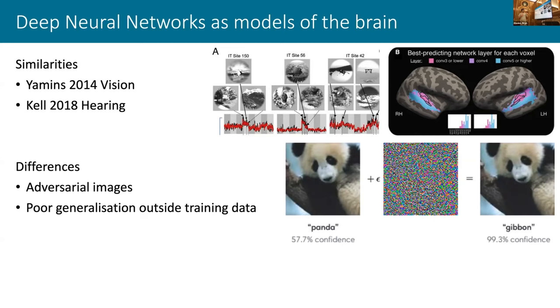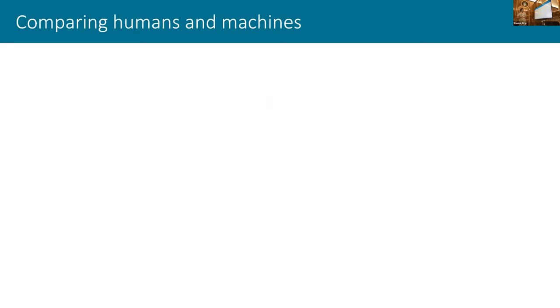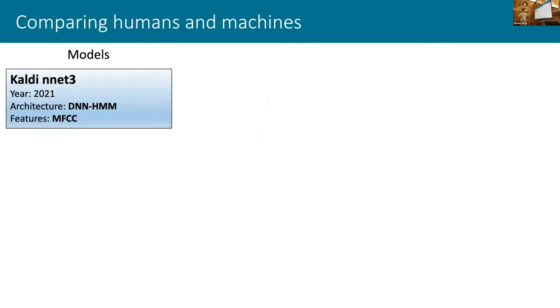The approach that I would like to take is to say, if we're imagining that these deep neural networks are somehow using the same mechanisms as the brains, then if we start creating manipulated sounds, we ought to see the same sorts of errors. We should see similar patterns of errors being introduced by different manipulations. That's what we tried to do with this study.